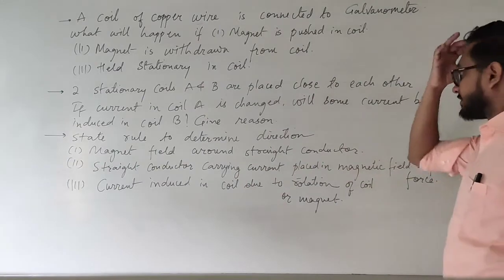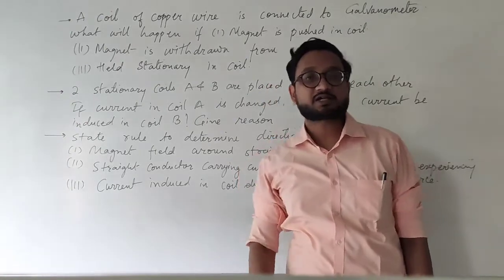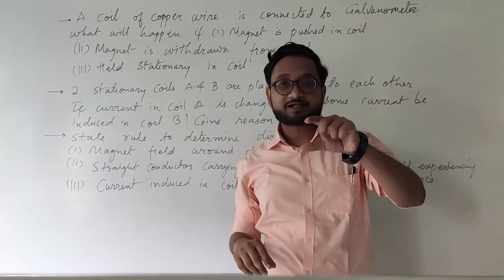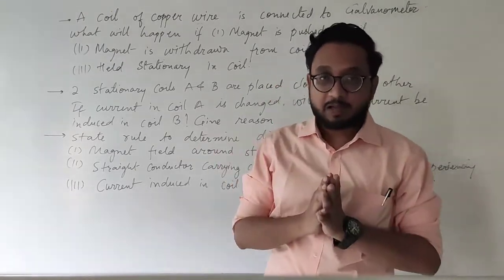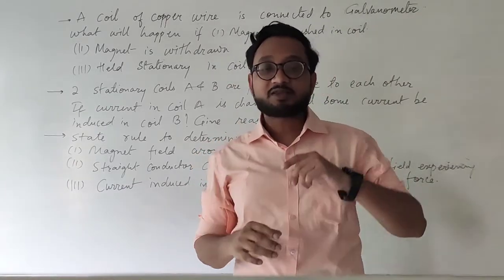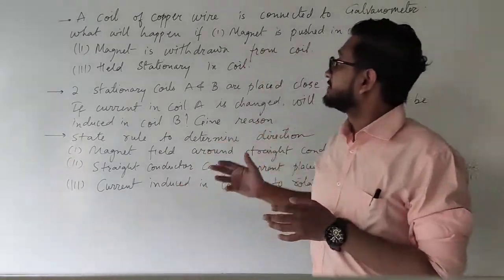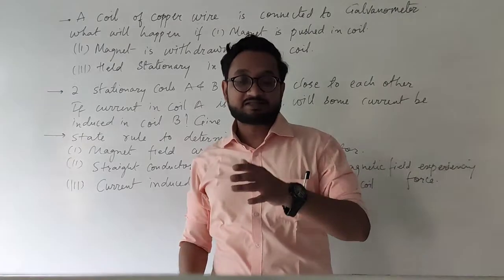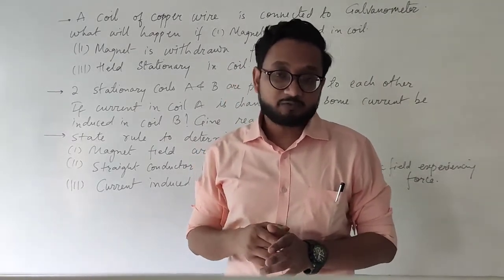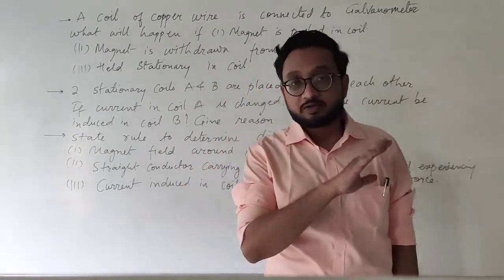What will happen if the magnet is held stationary inside the coil? If you are just keeping the magnet inside without moving it, nothing will happen. Current is only induced when the magnetic field is changing continuously around the coil. When the magnet is stationary, the magnetic field is not changing, so the galvanometer will show no deflection.